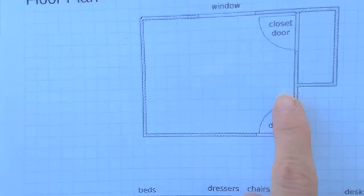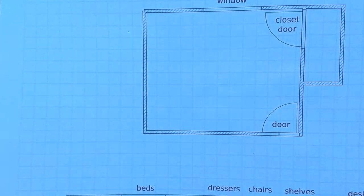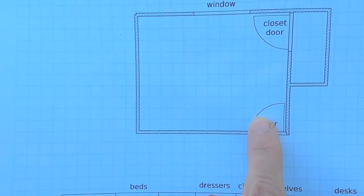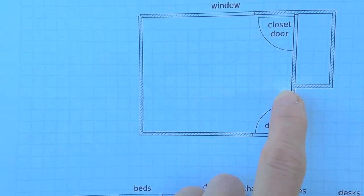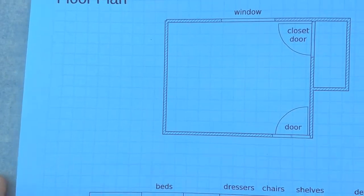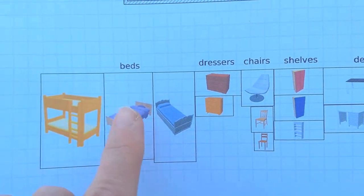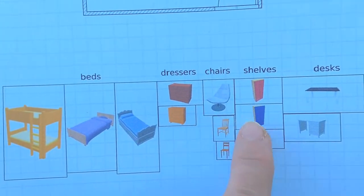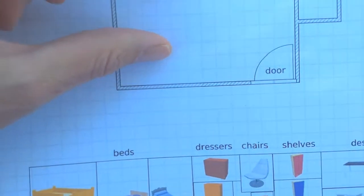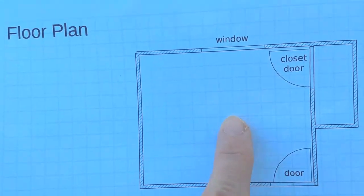Now, maybe you're wondering why a door has this round shape here. These arcs show the path that the door will take when it's opening and closing, because you don't want anything to be in the way of the door. So if we keep this area clear, our doors will be able to open and close. The rectangles around each of these pieces of furniture show how big they are, so if we cut along these lines, we could put them up here and decide where they'll go.